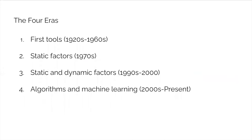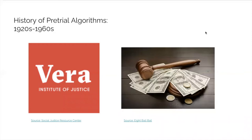The history of risk assessment tools can be broken into four distinct eras: the first risk assessment tools from the 1920s to 1960s; tools that use static factors in the 1970s; tools that use both static and dynamic factors from around the 1990s to 2000; and tools that use algorithms and machine learning, which have become prominent from the 2000s to the present.